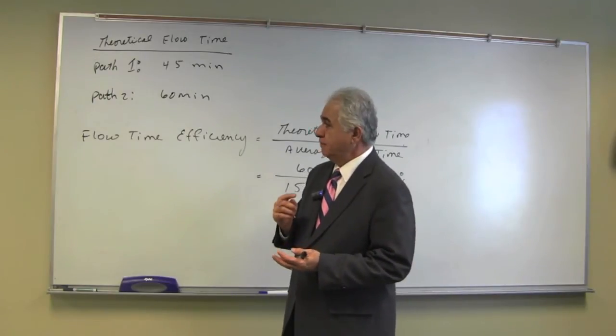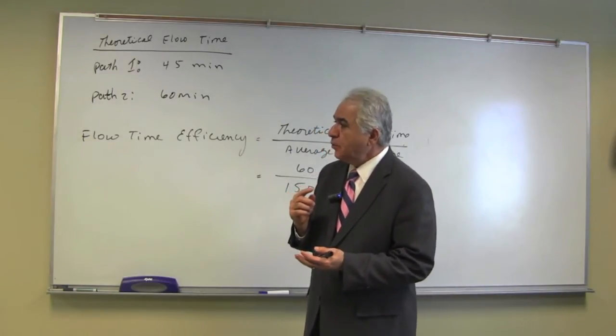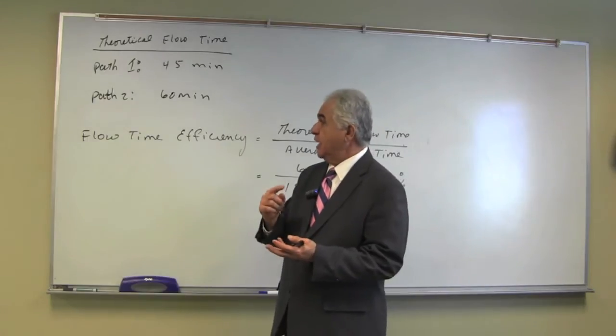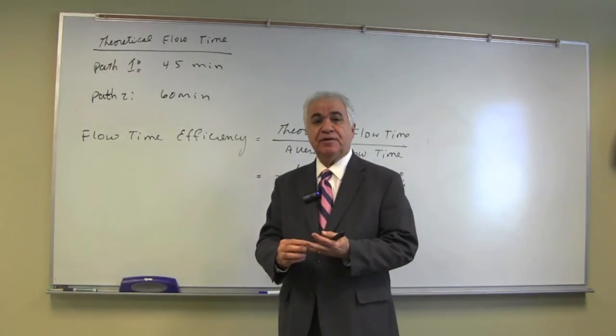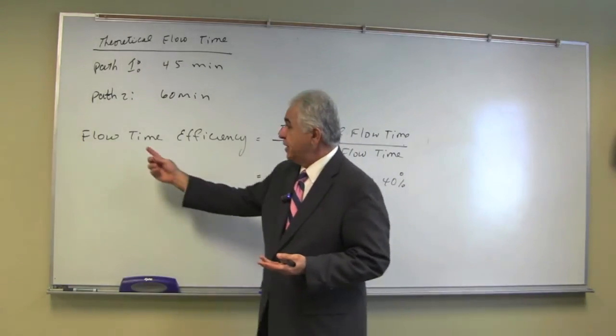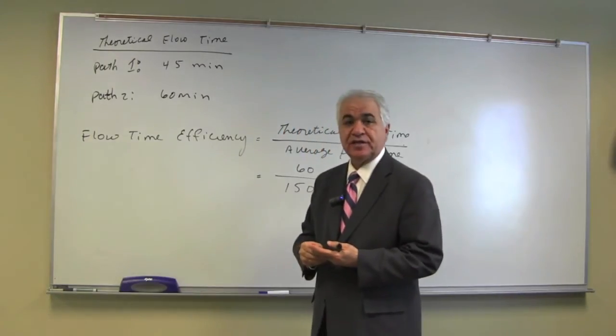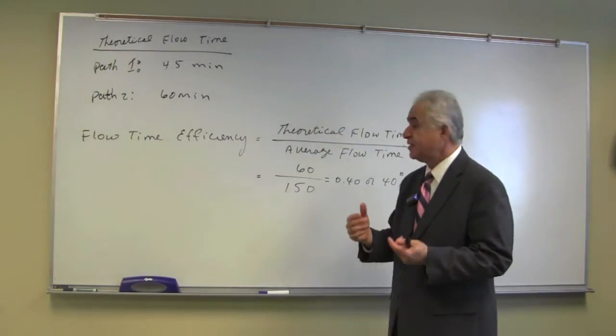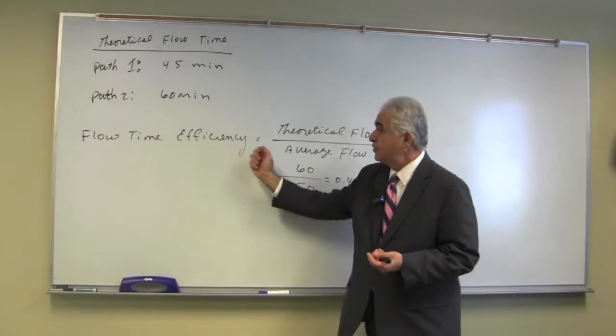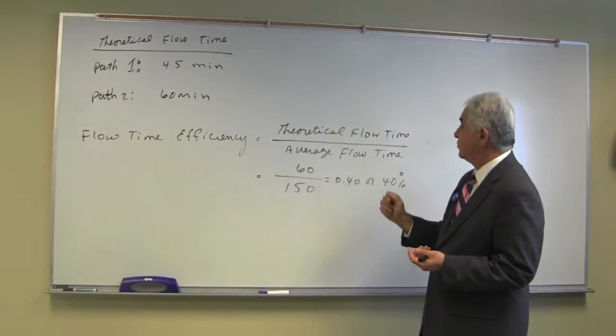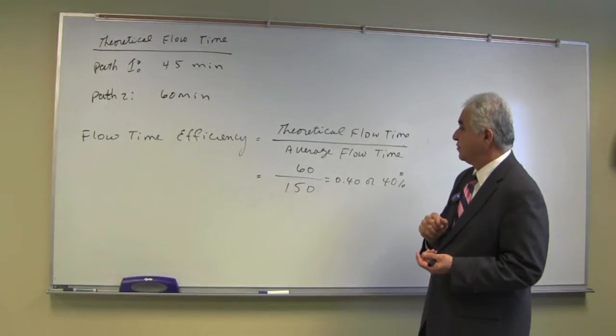Now we have the total flow time and we have the theoretical flow time. Having these two, we can determine flow time efficiency of a path or a process. The theoretical flow time efficiency is theoretical flow time over average flow time.